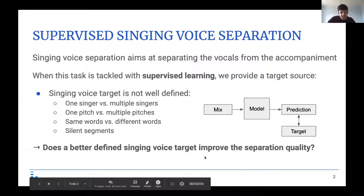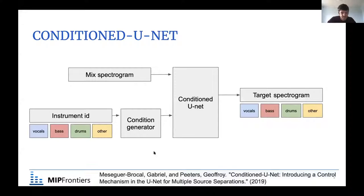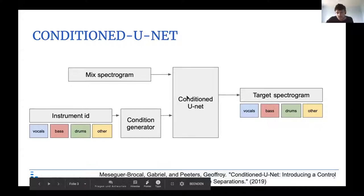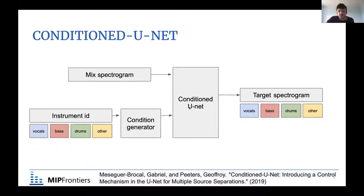To design our experiment, we started with the conditioned U-Net, a source separation model introduced in Izmir. It's based on the U-Net, a convolutional neural network with an encoder-decoder structure — fairly standard for source separation. It takes an input mixture spectrogram and outputs the source you want to separate.